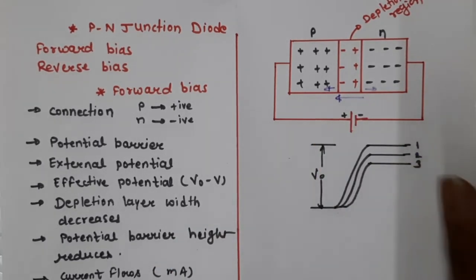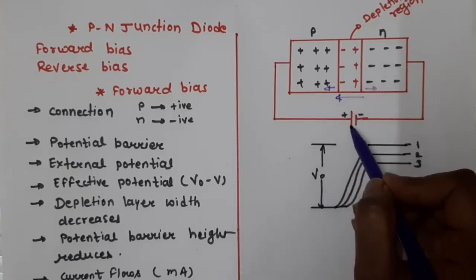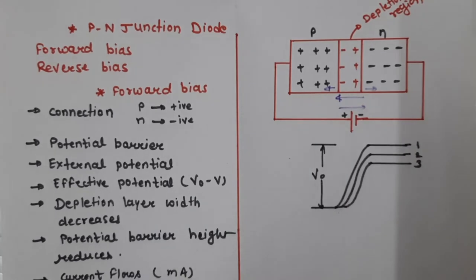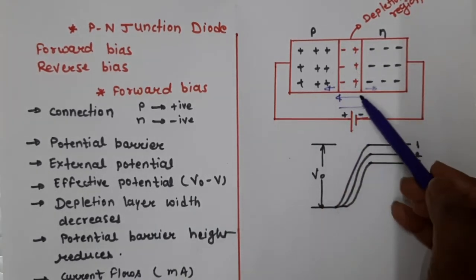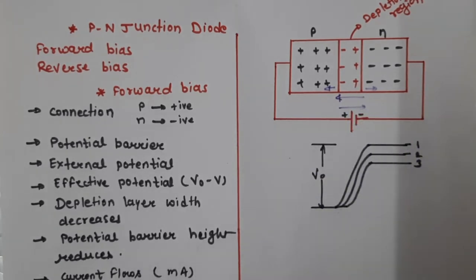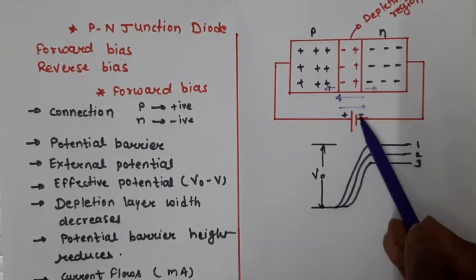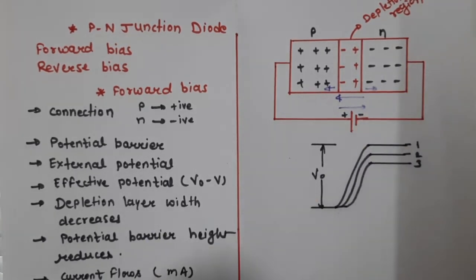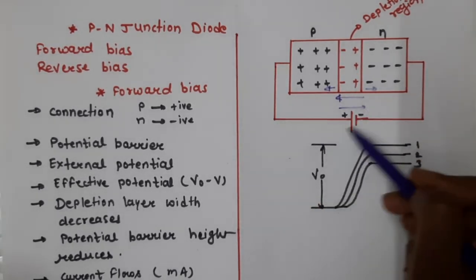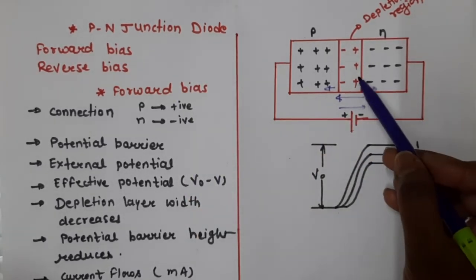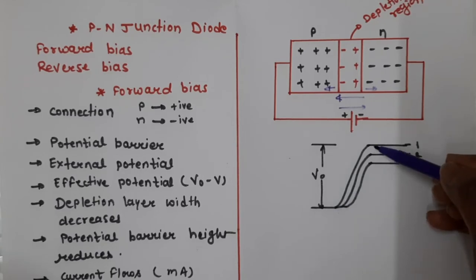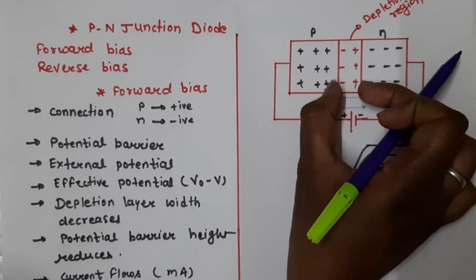In forward biasing, the external battery generates an electric field in the opposite direction to the depletion region's electric field. Since both electric fields are in opposite directions, the effective potential — that is, the potential barrier — is reduced. This means the depletion layer becomes smaller and the potential barrier height is reduced.